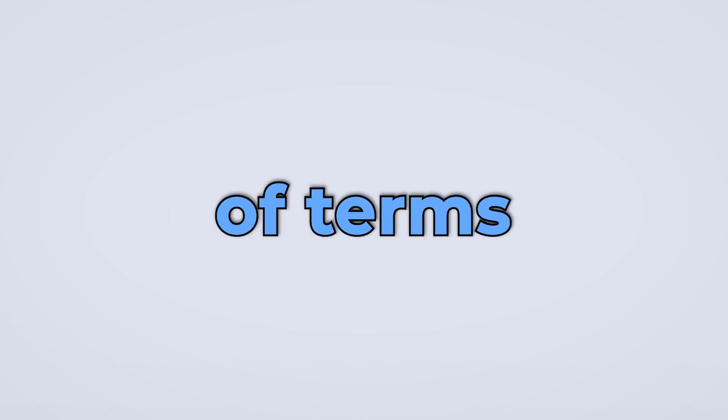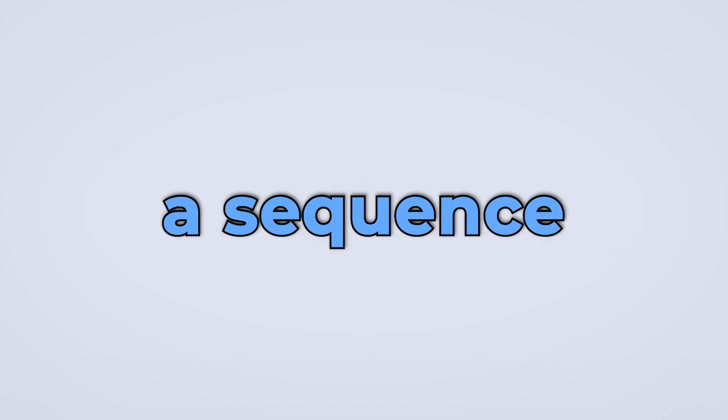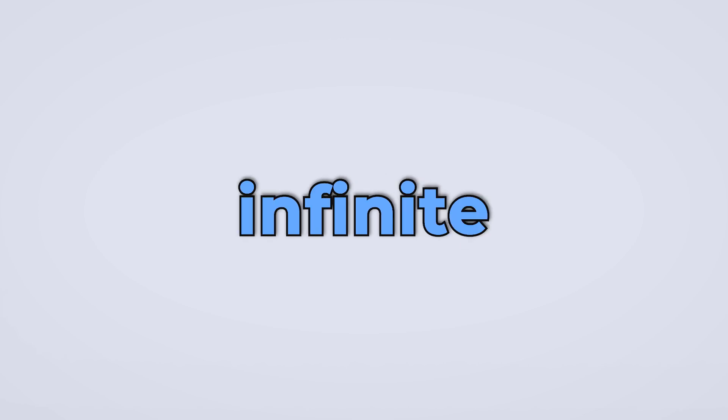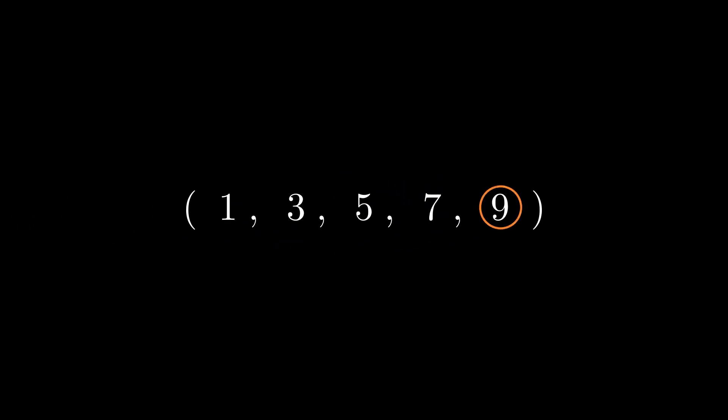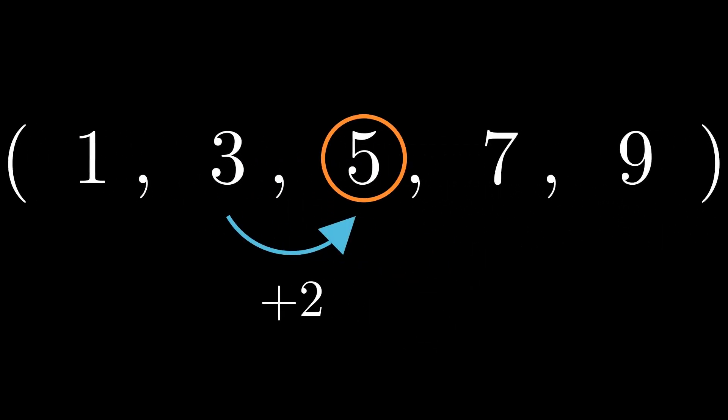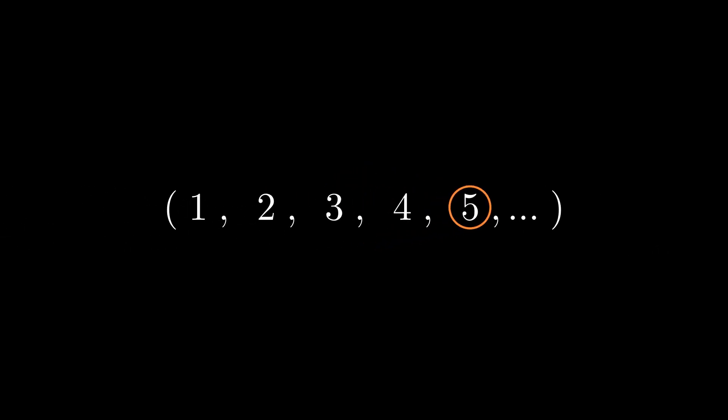Sequences can be finite or infinite depending on the number of terms they contain. A finite sequence has a specific number of terms, while an infinite sequence has an infinite number of terms. An example of a finite sequence is 1, 3, 5, 7, 9 — this sequence contains five terms and follows the pattern of adding two to each previous term to get the next term.